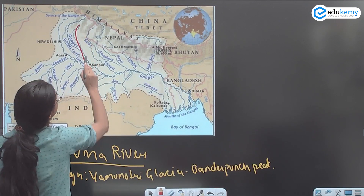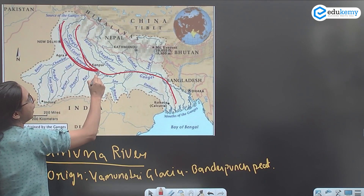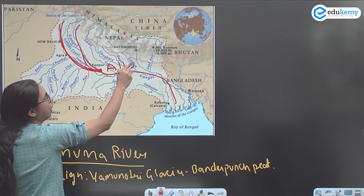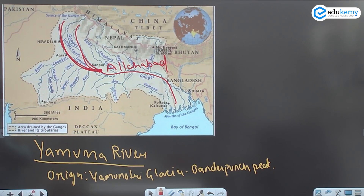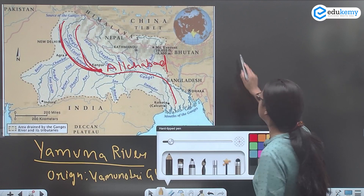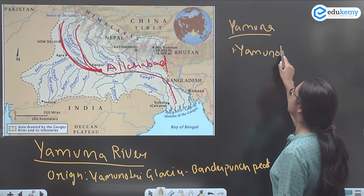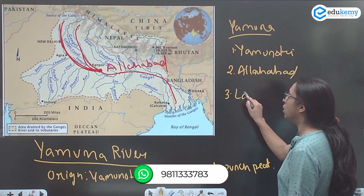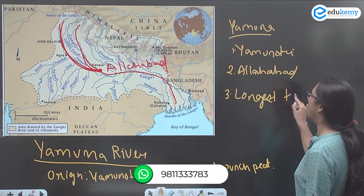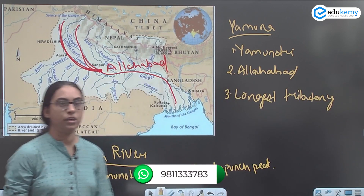Yamuna will meet Ganga at Allahabad, also known as Prayag. Yamuna actually meets Ganga there. It is the longest tributary of Ganga — the largest tributary is Ghagra, but the longest is Yamuna.